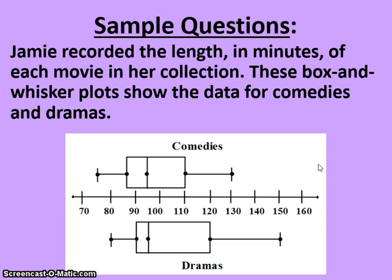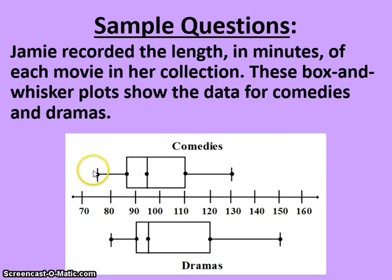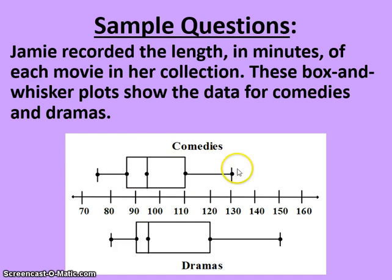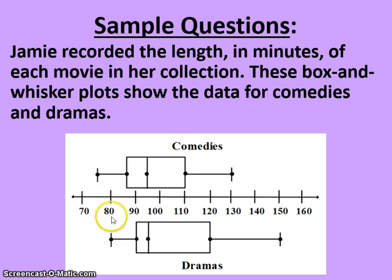Our sample questions begin with two box and whisker plots. Jamie recorded the length in minutes of each movie in her collection. These box and whisker plots show the data for comedies and dramas. Each plot is divided into four sections of 25%, allowing us to see the minimum, lower quartile, median, upper quartile, maximum, the full range, and the interquartile range. It also allows us to see overlaps — the values both data sets share — which here is from 80 to 130.